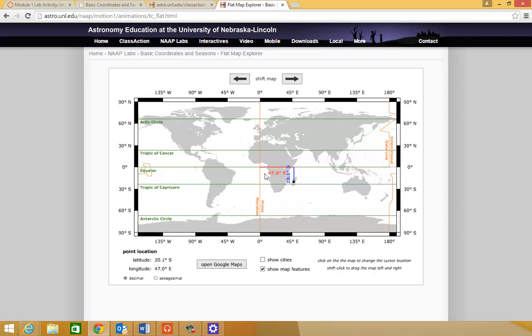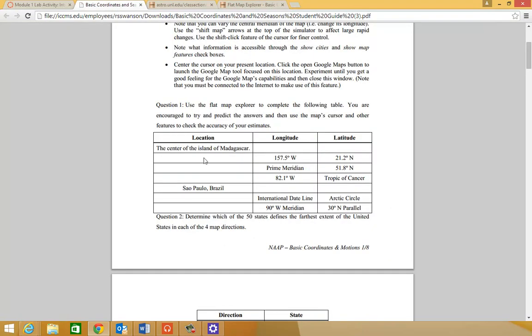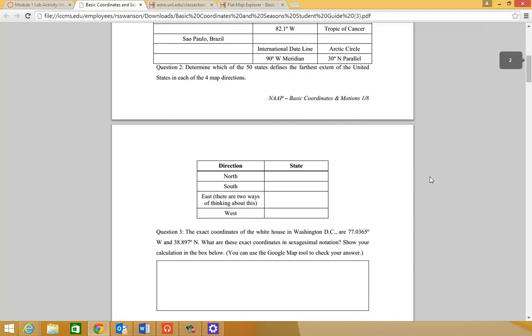The background will tell you what the prime meridian is. Madagascar is 47 degrees east of the prime meridian. You fill in those two values in the data table, and you're good to go. Notice there's a bunch more that you can play around with.